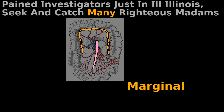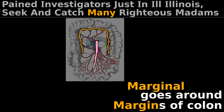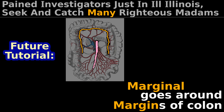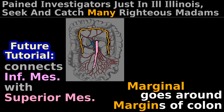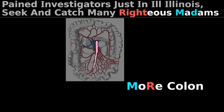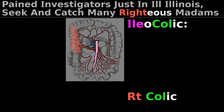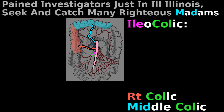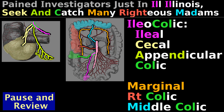The marginal artery is a big artery that goes around the margins of the colon. Please watch our inferior mesenteric artery tutorial for more details. There are more colon arteries that do not come off the ileocolic artery: the right colic artery and middle colic artery.